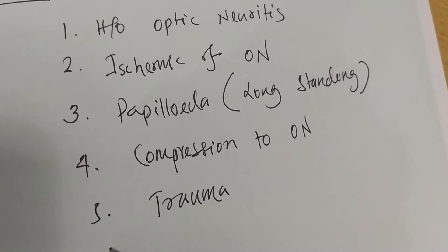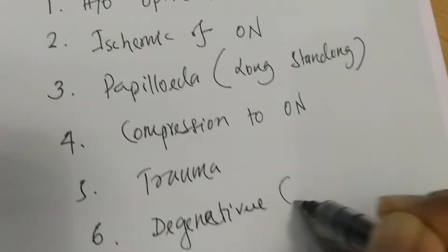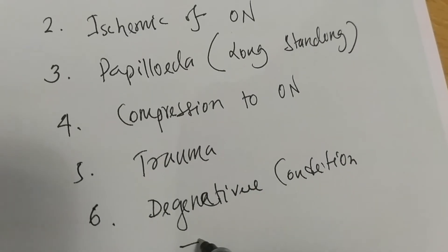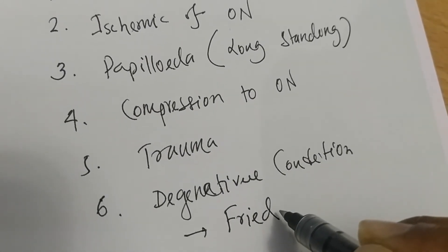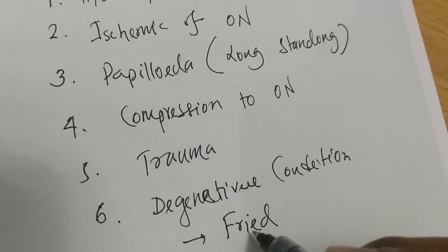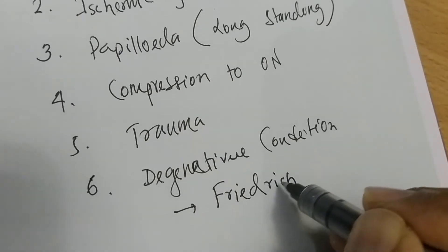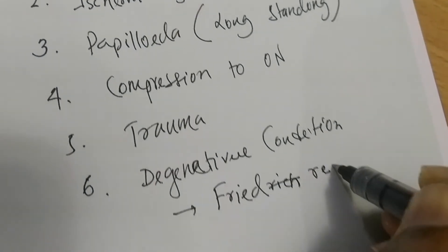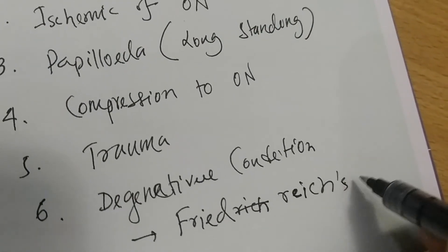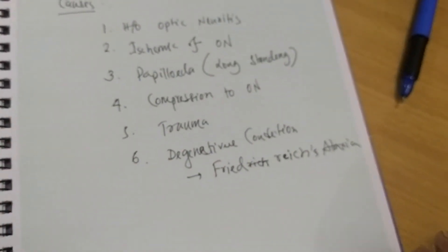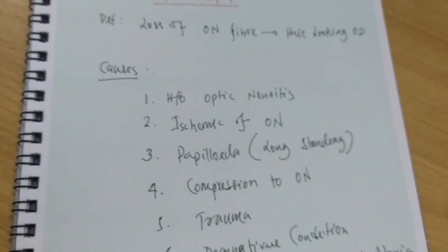Cause number six: degenerative conditions. Some degenerative conditions like hereditary Friedreich's ataxia — spelled F-R-I-E-D-R-E-I-C-H — can cause optic atrophy. So there are six causes of optic atrophy, which is a very important question in exams.